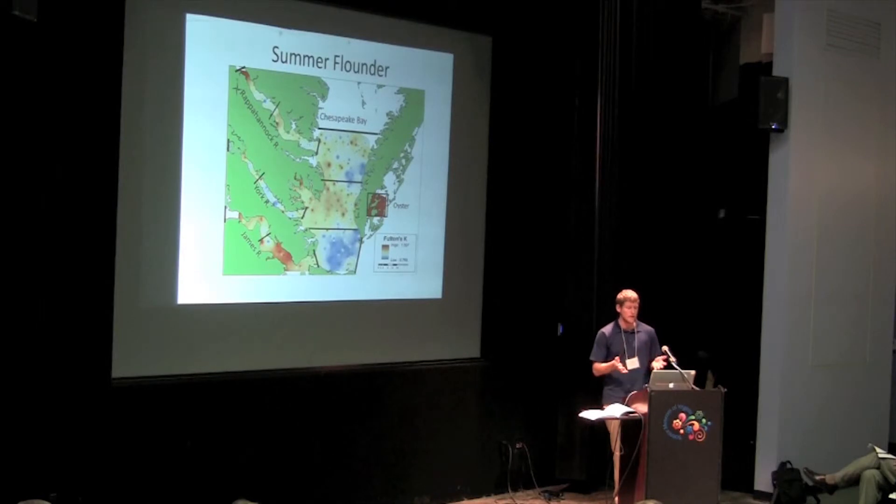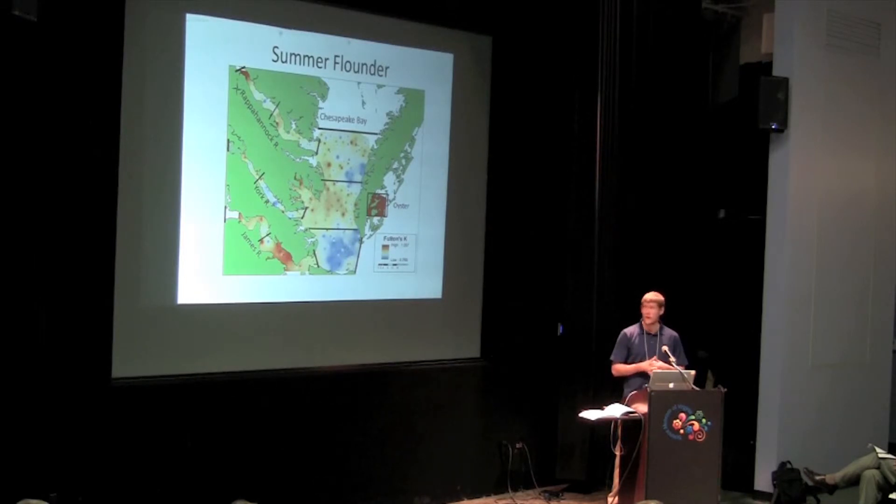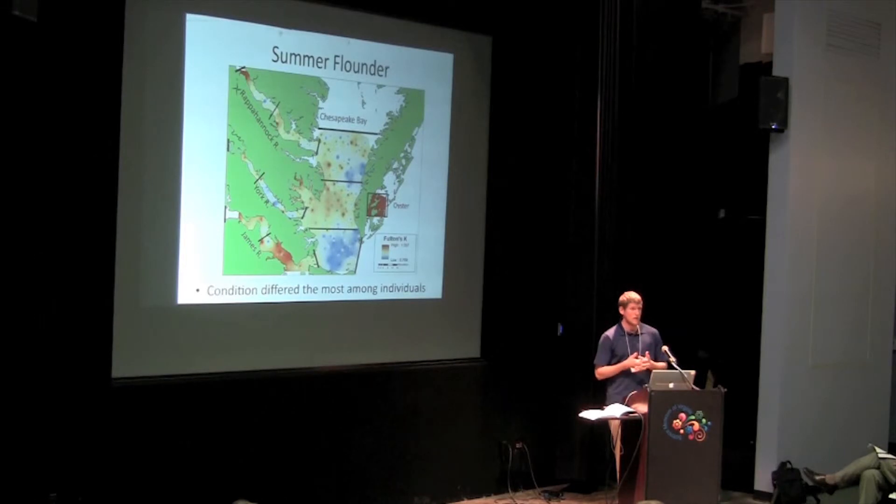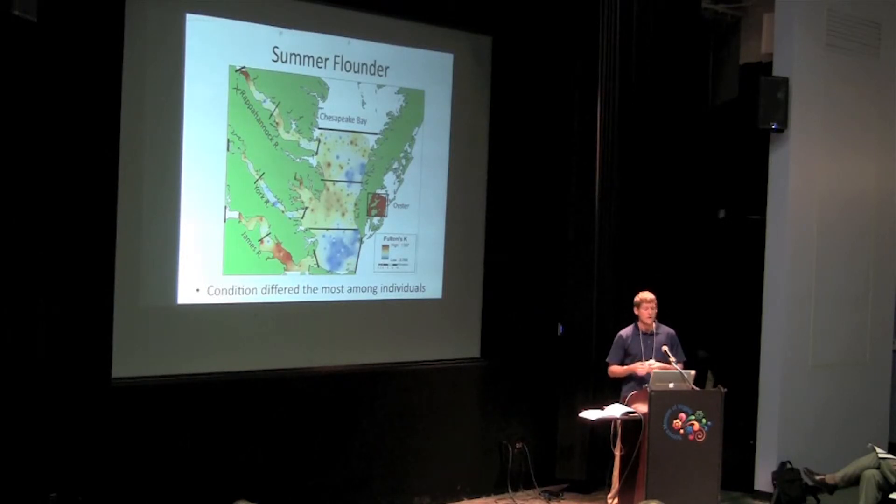Moving on to some of the spatial trends, here we see how healthy summer flounder are in different parts of the Bay based on those length to weight ratios. When we modeled this data, the biggest finding that we came across was that condition differed most among the individuals, which means that we were catching both high and low condition flounder in the exact same locations.